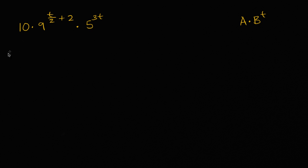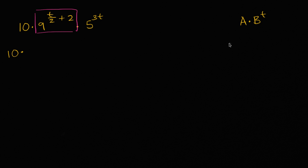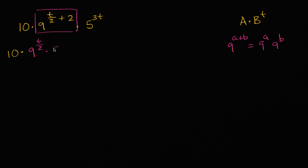So 10, I'll just leave that as 10 for now — there doesn't seem to be much to do there. But there's all sorts of interesting things going on with 9 to the t over 2 plus 2. I can break this up using the property that 9 to the a plus b is the same thing as 9 to the a times 9 to the b. So I can rewrite this as 9 to the t over 2 power times 9 squared.